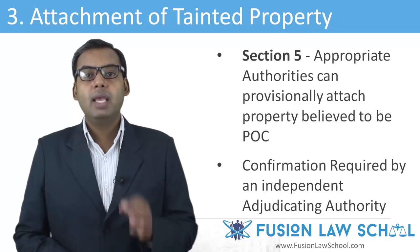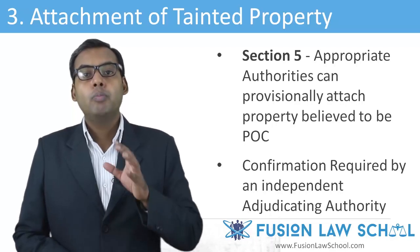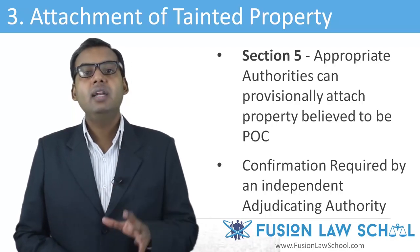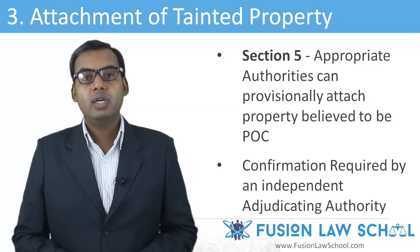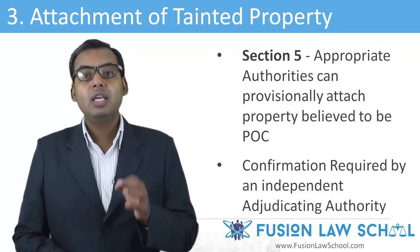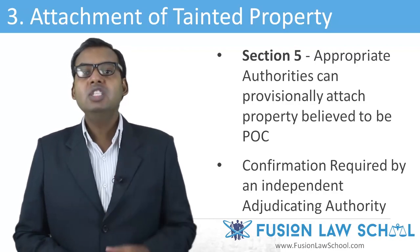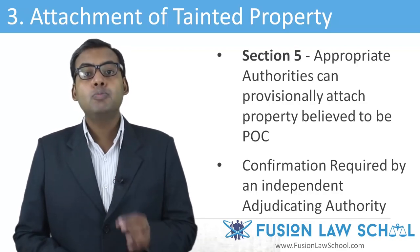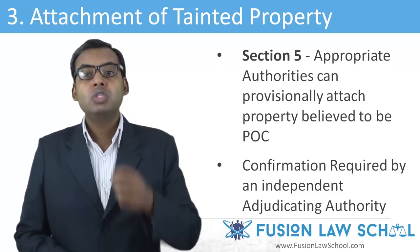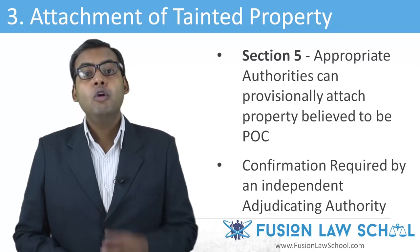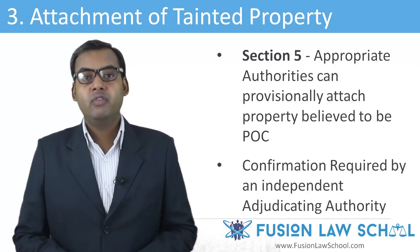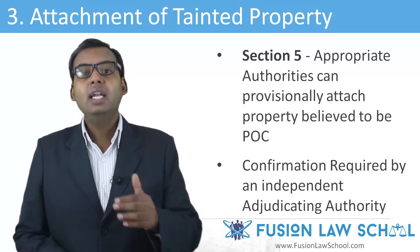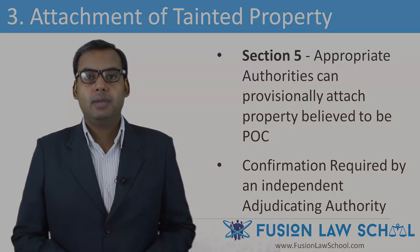The third feature of PMLA is powers for attachment of tainted property. Under Section 5 of PMLA, appropriate authorities appointed by the Government of India can provisionally attach property believed to be proceeds of crime for 180 days. Such an order is required to be confirmed by an independent adjudicating authority.